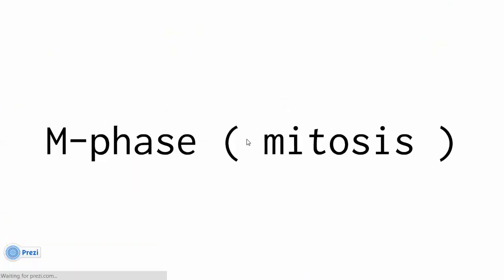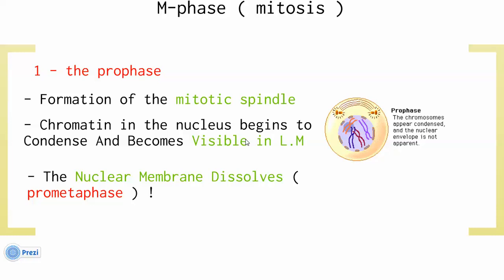The M phase (mitosis) consists of four phases. Number one: prophase — the major event is formation of the mitotic spindle. The chromatin in the nucleus begins to condense and becomes visible under the light microscope. The nuclear membrane dissolves; when this happens, we call it prometaphase — the phase between prophase and metaphase. So in prophase: mitotic spindle forms, chromatin condenses and becomes visible, and the nuclear membrane dissolves.